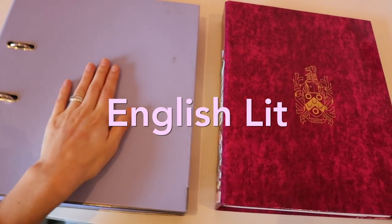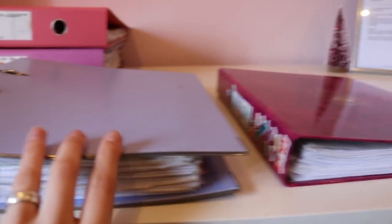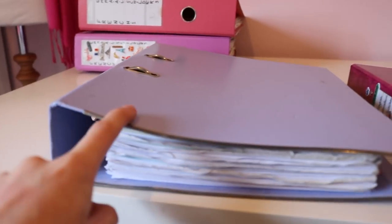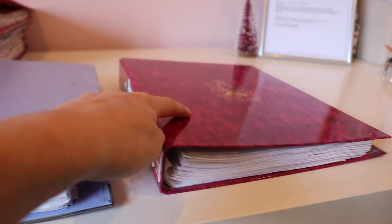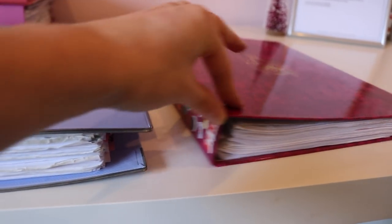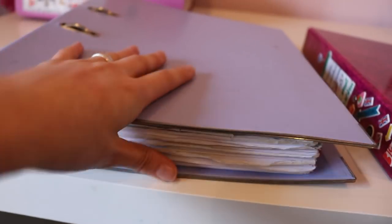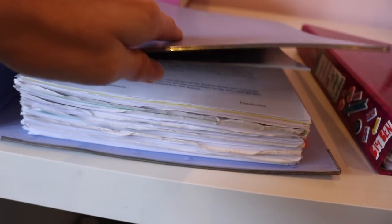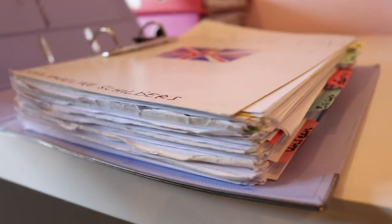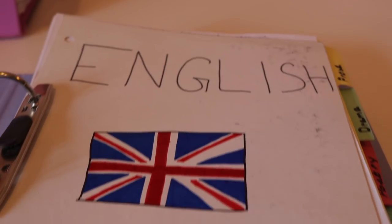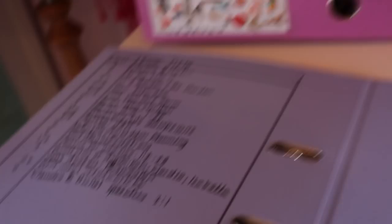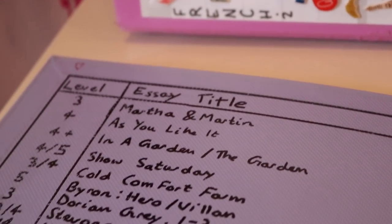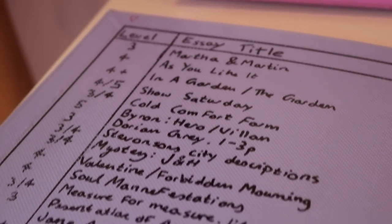These two are my English folders. This is first years and this is second years. Hence the disparity between the folder sizes comes from in second years we were working inside books. So the notes are all in there and this one is just, I have no idea what this is if I'm really honest.